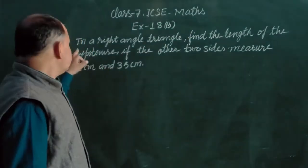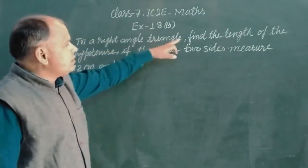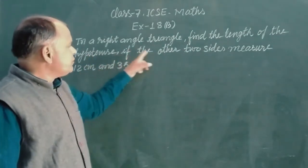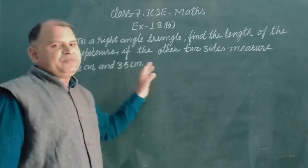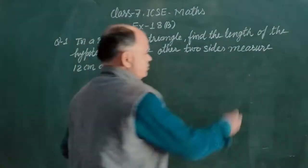So student, question is: in a right angle triangle, find the length of the hypotenuse if the other two sides measure 12 cm and 35 cm respectively.